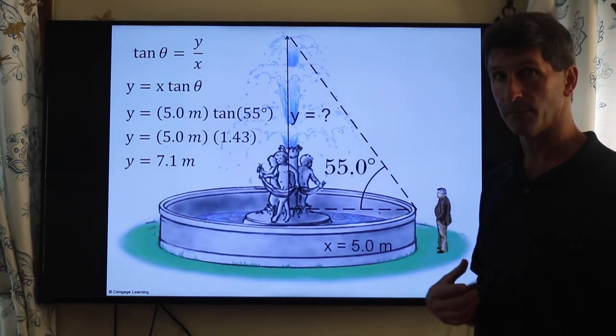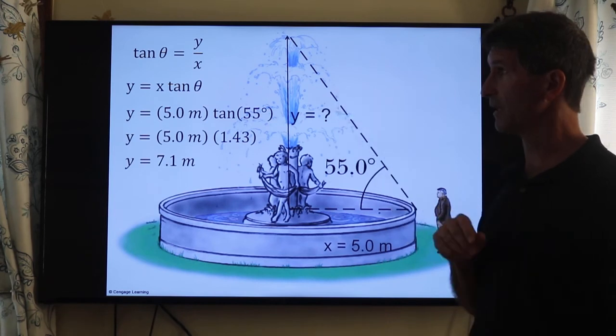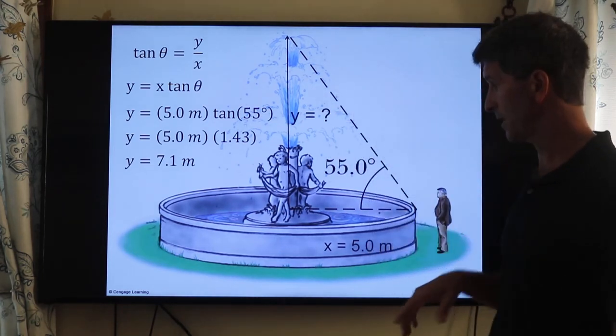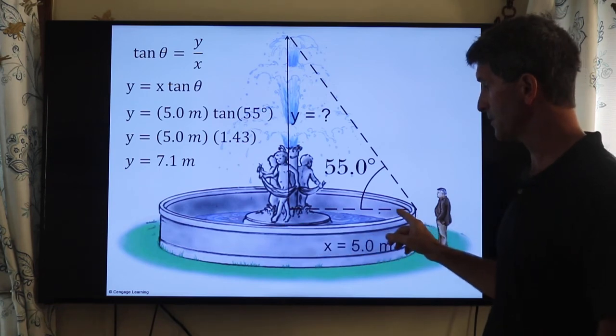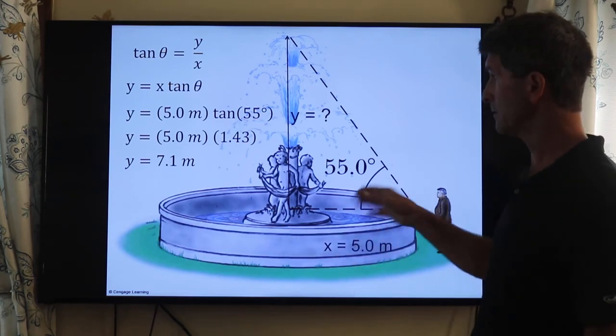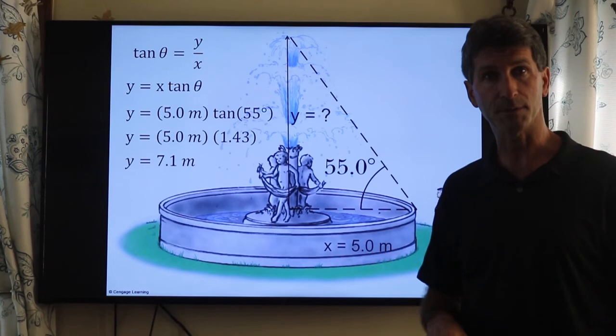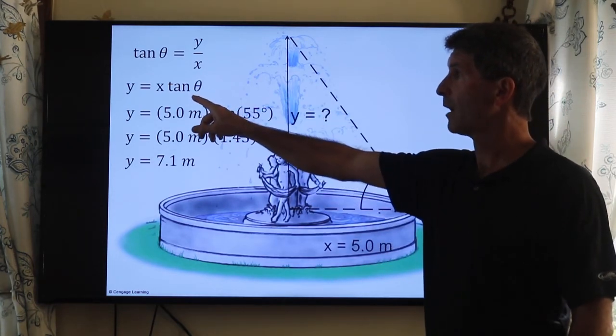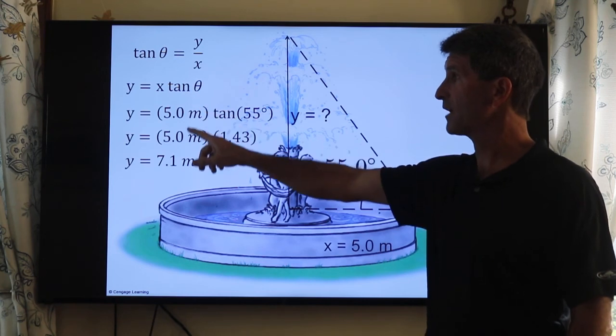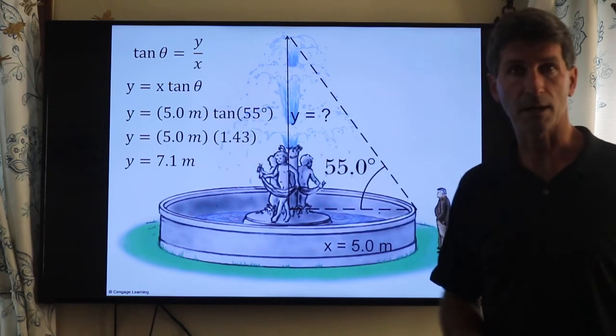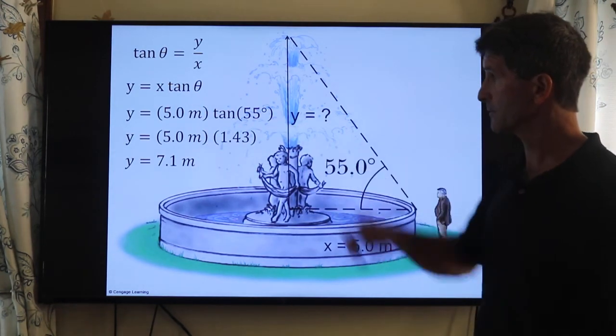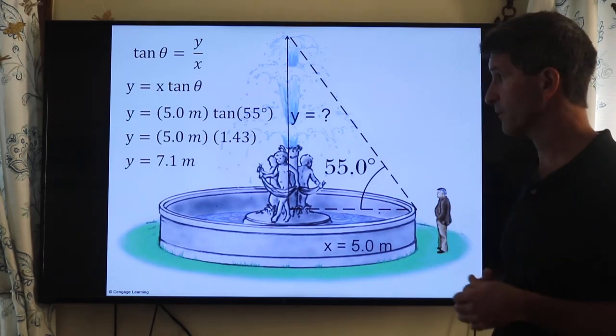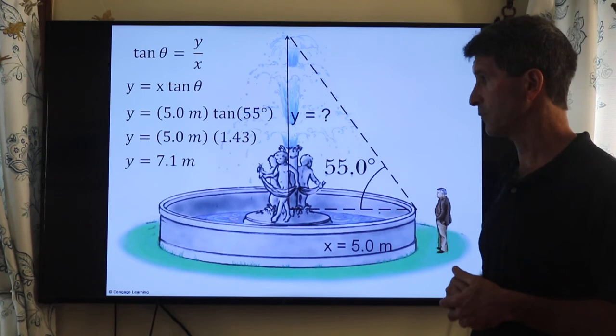How do I find the height? Well, tangent θ is equal to the opposite divided by the adjacent. I know the adjacent. I know the angle. I don't know the opposite. So I solve for y. Y is equal to x times tangent θ. X is equal to 5 meters. The angle is 55 degrees. The tangent of 55 degrees is 1.43. I get 7.1 meters.